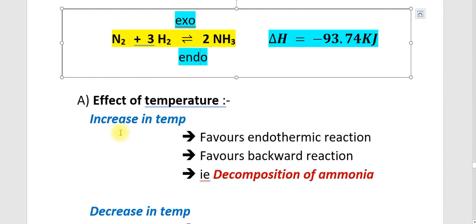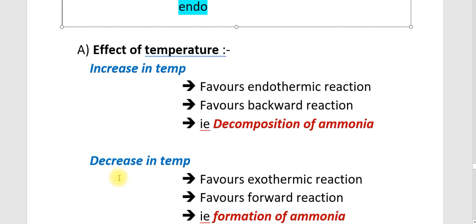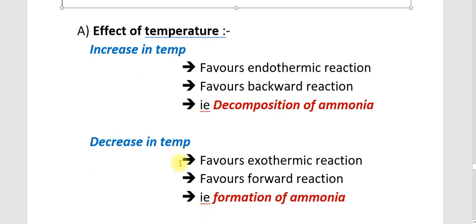First is the effect of temperature. An increase in temperature favours the endothermic reaction. Here, the endothermic reaction is the backward reaction, which is 2NH3 decomposing into N2 plus 3H2. That is, decomposition of ammonia will be favoured if temperature increases.